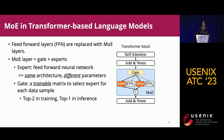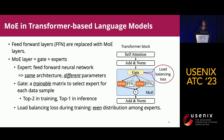Each data sample selects two experts over all experts in the training stage and only one expert in the inference stage. During training, a load balancing loss is added to the training loss to encourage an even data distribution among experts. This loss is one of the components in training that is deactivated during the inference stage.